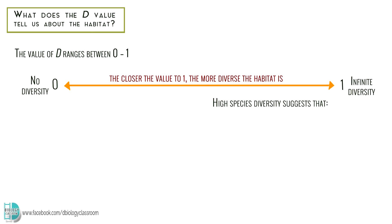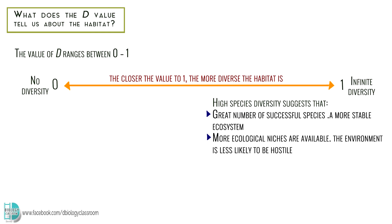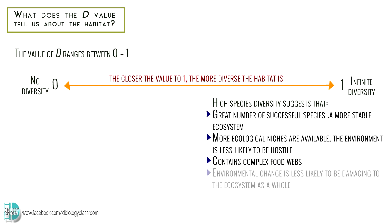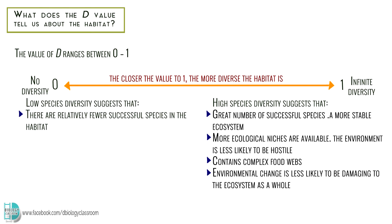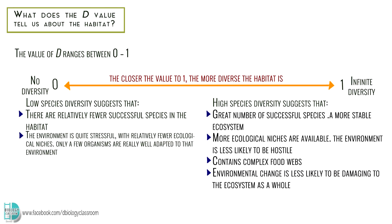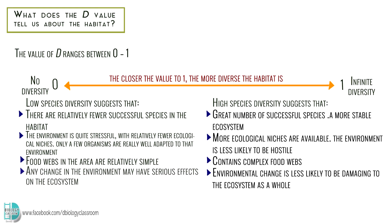High species diversity suggests that the habitat has a greater number of successful species and therefore is a more stable ecosystem. More ecological niches are available, and the environment is less likely to be hostile. It contains complex food webs, and any environmental change is less likely to be damaging to the ecosystem as a whole. A low species diversity suggests that there are relatively fewer successful species in the habitat. The environment is quite stressful with relatively fewer ecological niches, and only a few organisms are really well adapted to that environment. Food webs in the area are relatively simple, and any change in the environment would probably have quite serious effects on the ecosystem.